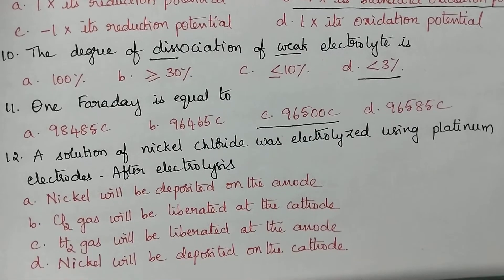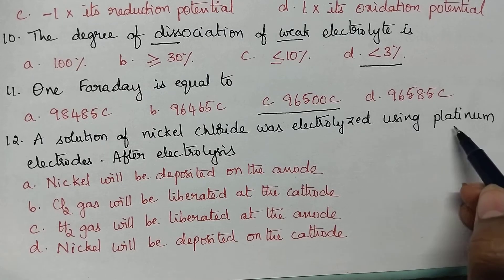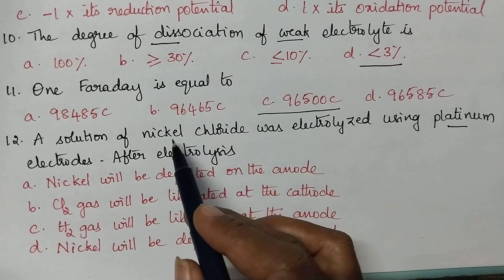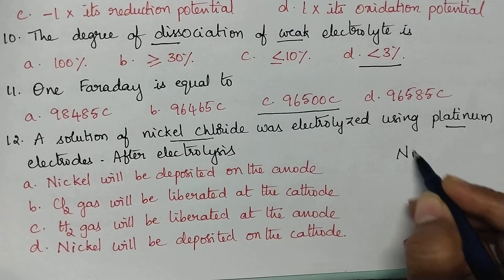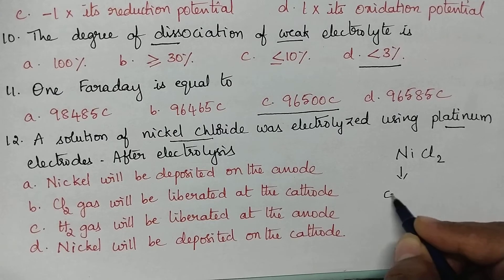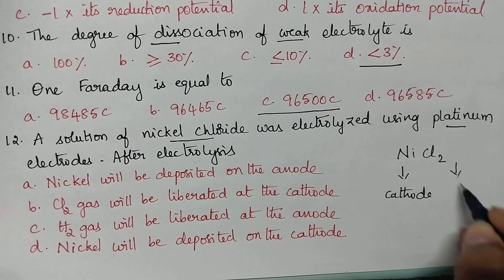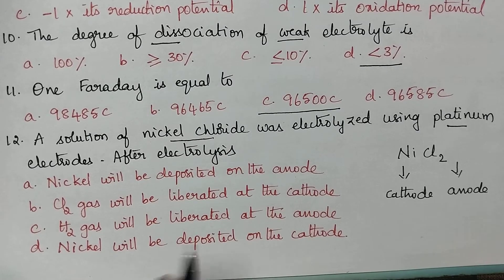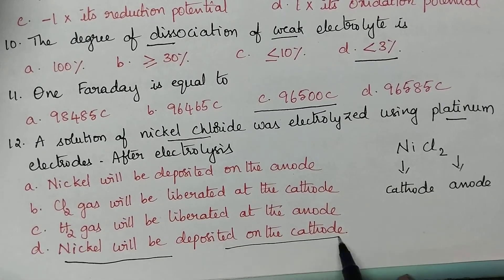A solution of nickel chloride was electrolyzed using platinum electrodes. During electrolysis of nickel chloride solution, nickel gets deposited at the cathode and chlorine gas is liberated at the anode. So nickel will be deposited on the cathode.